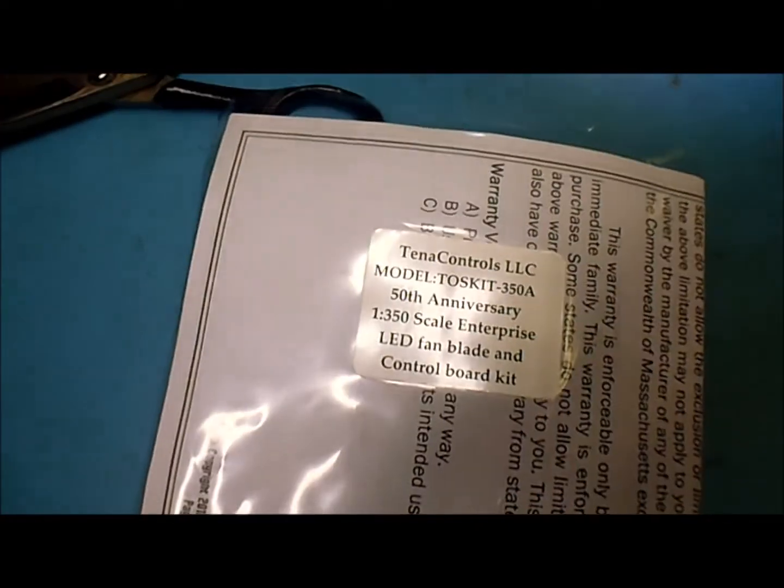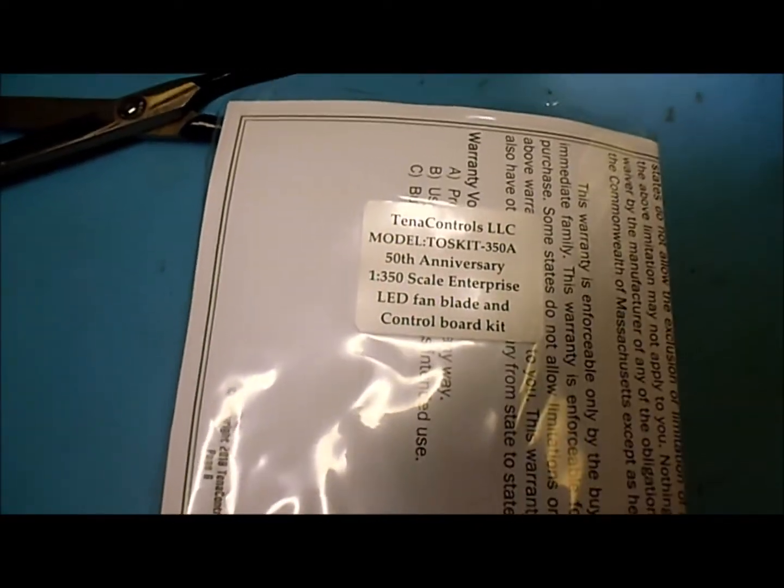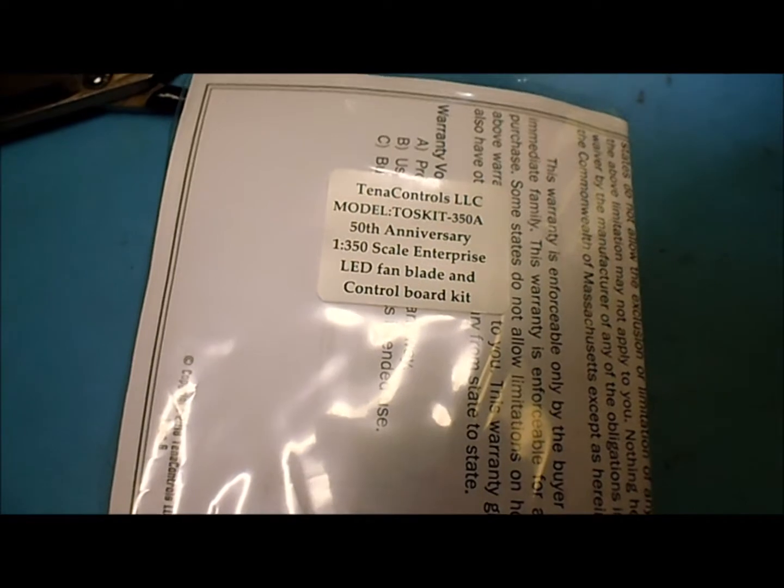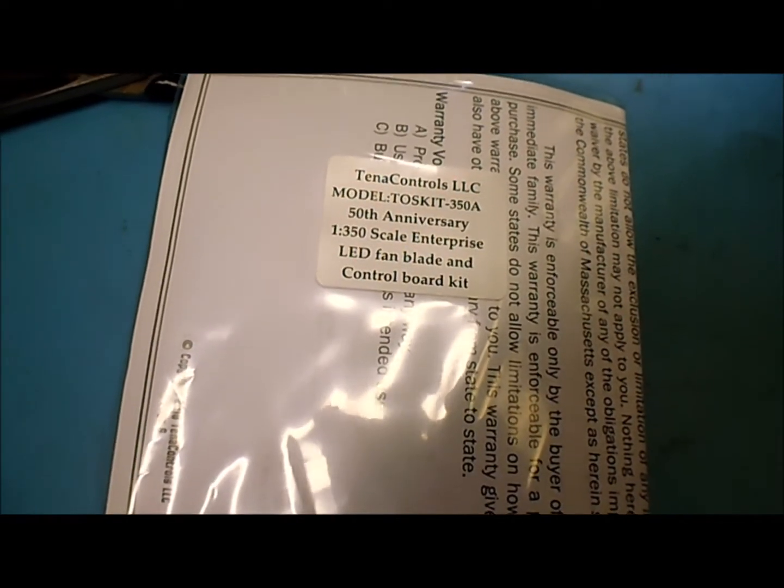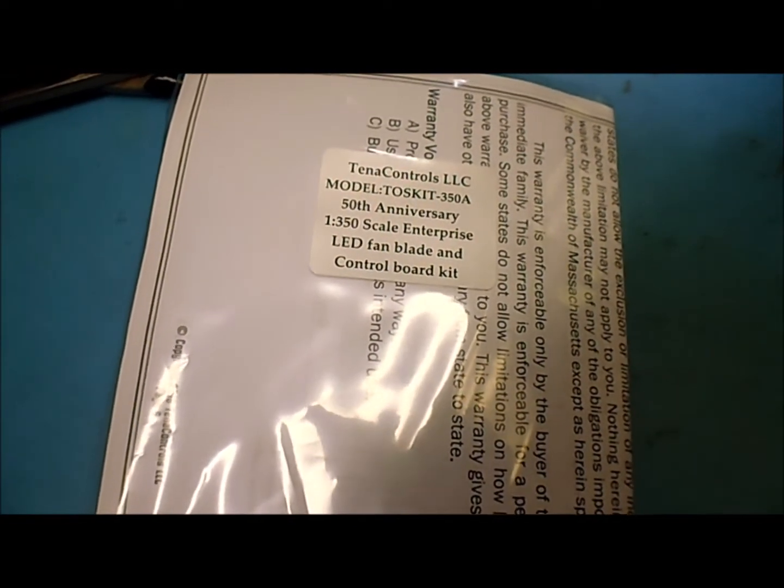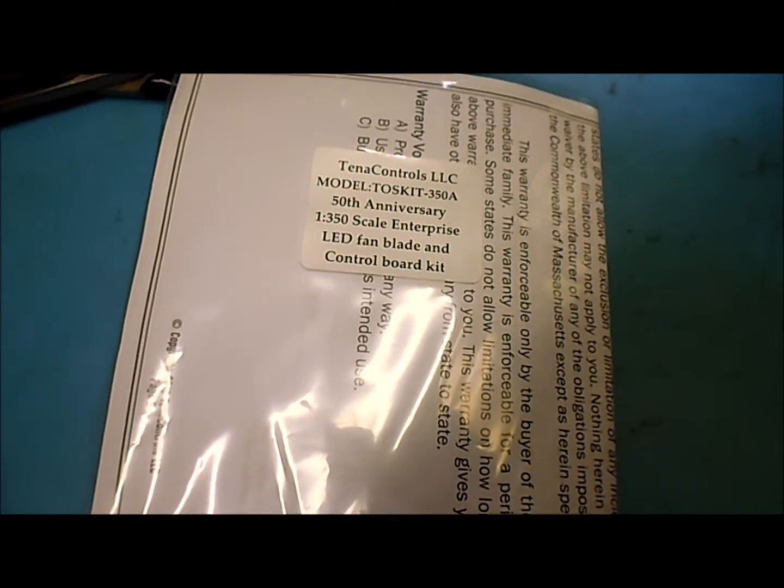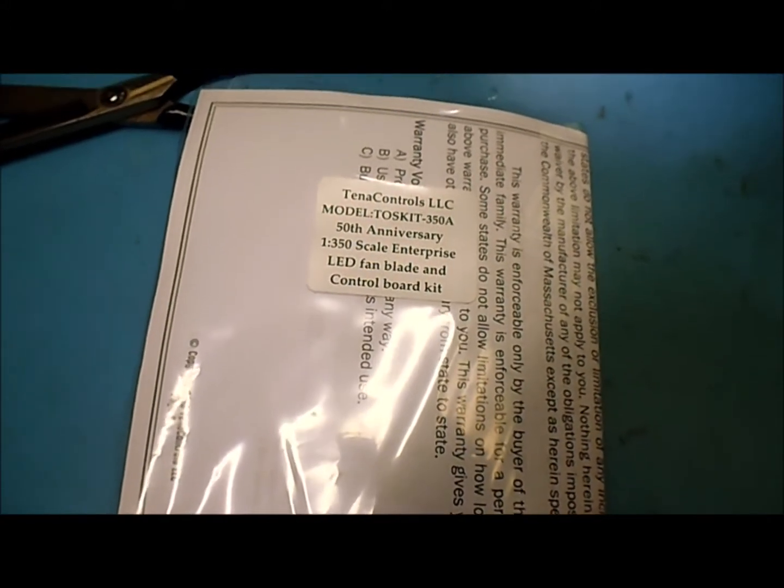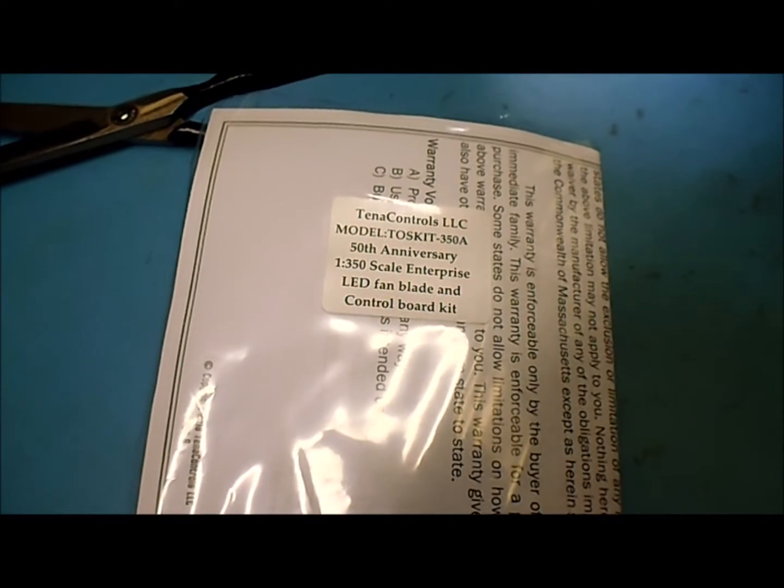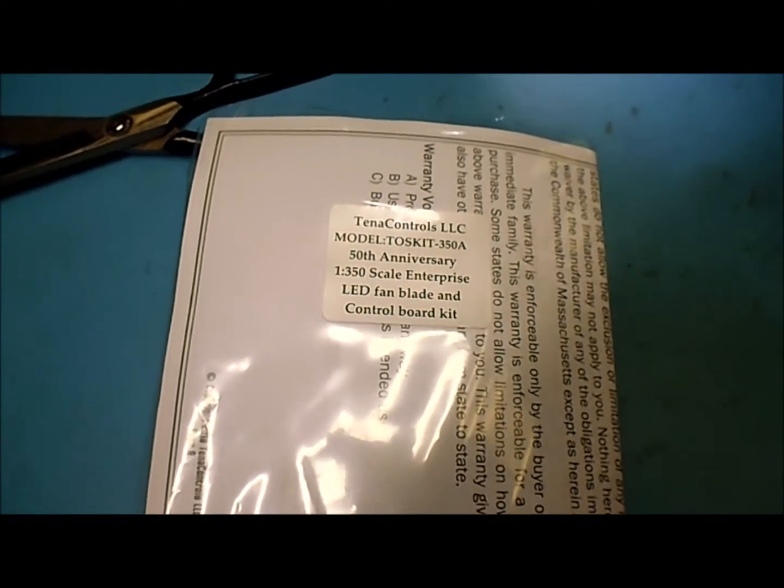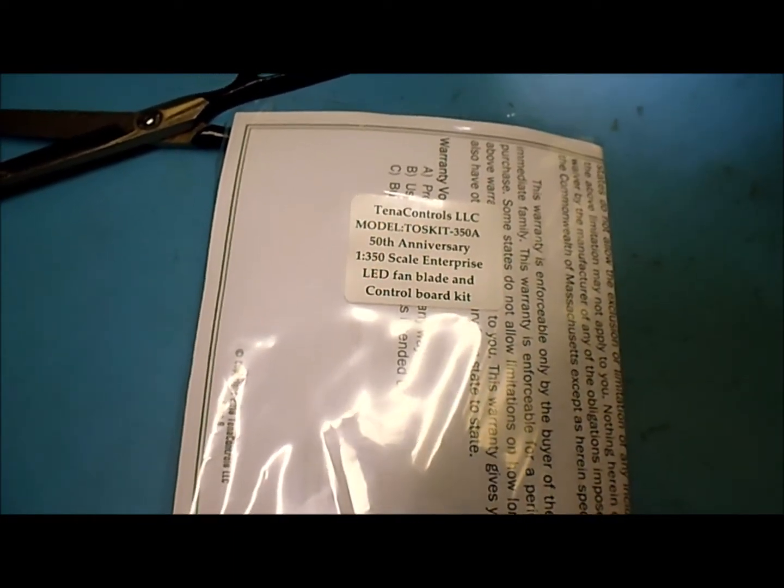We're going to look and wire up the TOS kit 350A - 50th anniversary, 1/350 scale Enterprise LED fan blade and control board kit, which you can then extrapolate and use this information basically on any other kit we have.